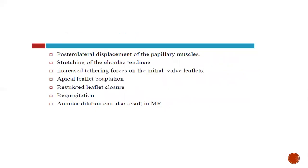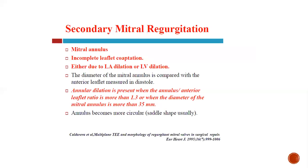Tethering of the valve closure — appearing as tenting of the mitral valve — can be seen, along with posterolateral displacement of the papillary muscle, apical leaflet coaptation, restricted leaflet closure, and mild regurgitation that is generally reversible. Secondary mitral regurgitation may be due to involvement of the mitral annulus and incomplete leaflet coaptation because of LA and LV dilatation. Annular dilatation is present when the annulus-to-anterior leaflet ratio is more than 1.3 or when the diameter of the mitral annulus is more than 35 mm.